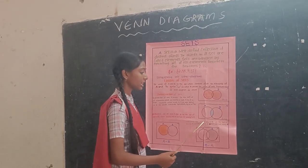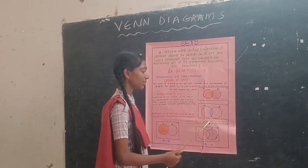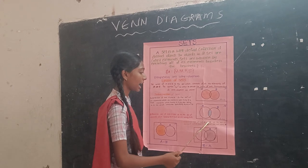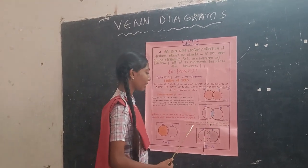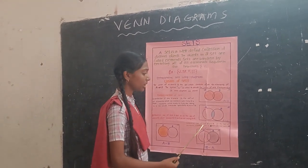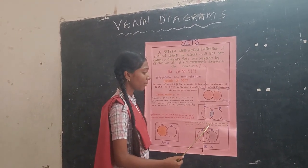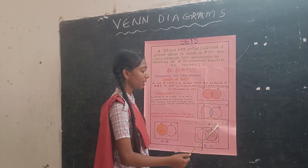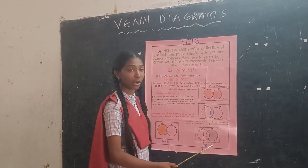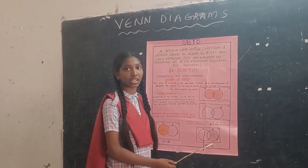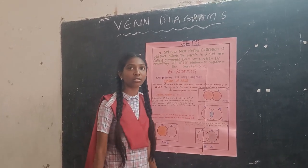The difference of sets B and A is the set of elements which belong to B but do not belong to A. This is the Venn diagram of B minus A. Thank you.